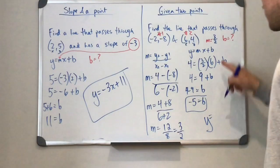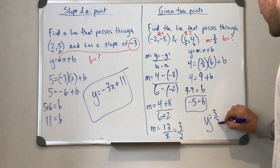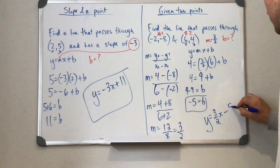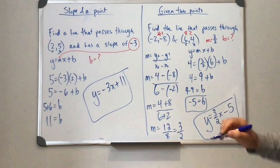And we end up with negative five for b. So our equation would be y equals three halves x minus five. There's our final answer here.